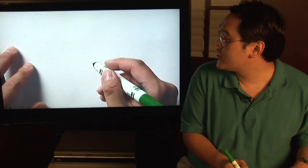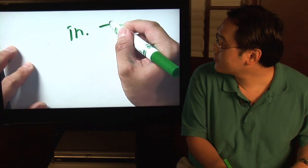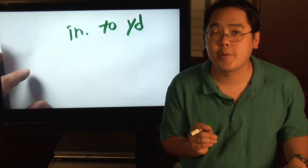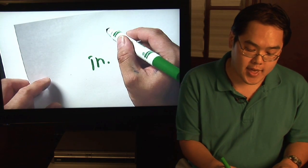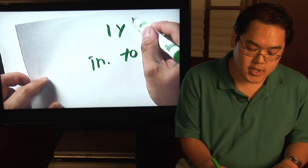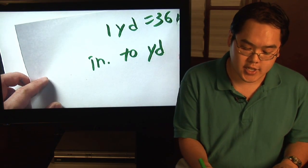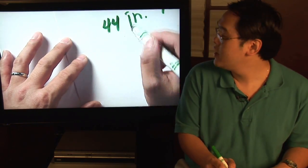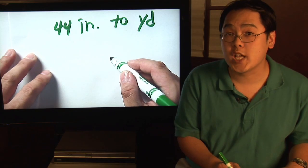Now suppose you want to convert inches to yards. Now the relationship that you need to know though before you do anything is that 1 yard is equal to 36 inches. Now suppose you want to convert, let's just say 44 inches to yards, same exact idea.